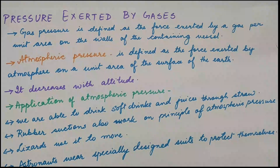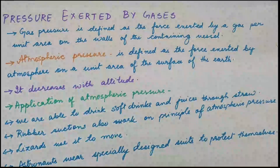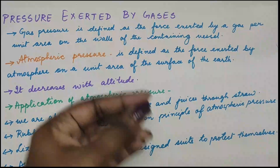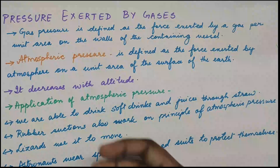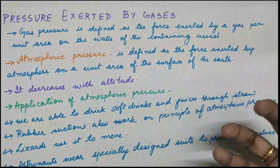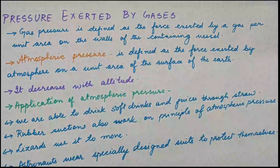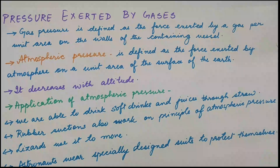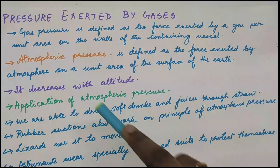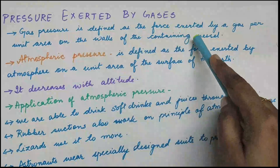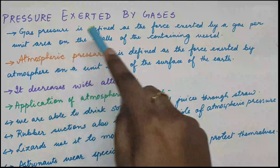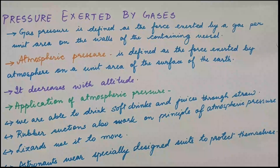Our next topic is pressure exerted by gases. For example, if you take a balloon and fill it with air, then leave it without tying the end, you will see that air comes out through the opening and the balloon moves out with force. So gas also has pressure. Gas pressure is defined as the force exerted by a gas per unit area on the walls of the containing vessel.